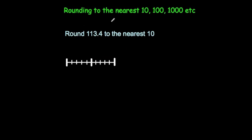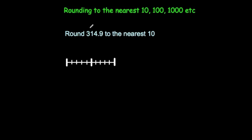Round 113.4 to the nearest 10. We would have 110 here and 120 here. 113.4 would be somewhere here — as you can see, it's closer to 110, so the answer is 110. You can just look at the 3 in the units, which tells you to round down. Next: 314.9. You'd have 310 and 320. 314.9 is very close to the middle value 315 but still to the left, so it's closer to 310. The answer is 310 — the units digit 4 tells you to round down.